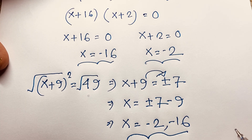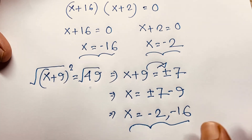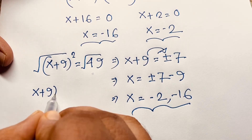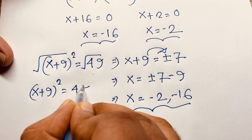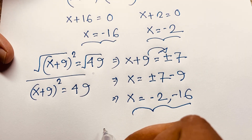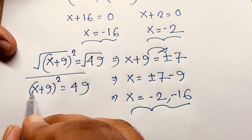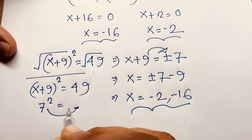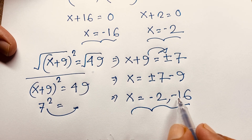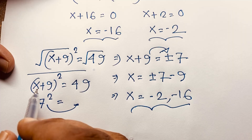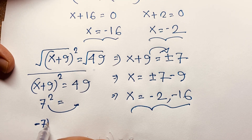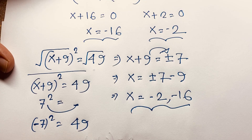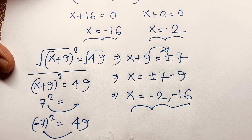So this is our final answer from this method. Let's verify. Our question is (x + 9)² = 49. Now if x is equal to negative 2, it will be 7 to the power 2, and obviously 7 squared equals 49. And if x is equal to negative 16, it will be negative 7 to the power 2, which is also positive 49. So left hand side equals right hand side. Both answers are verified.